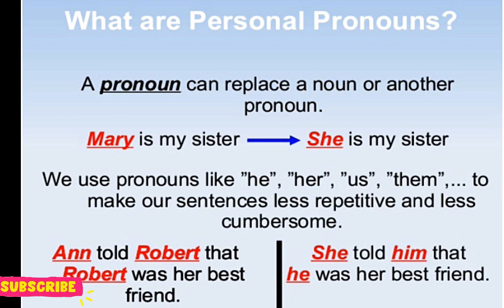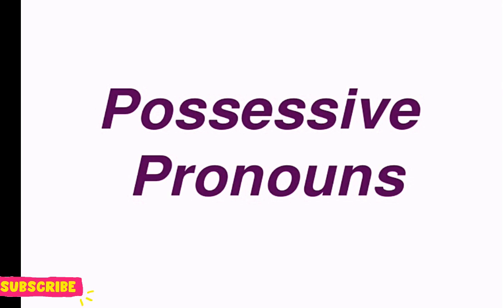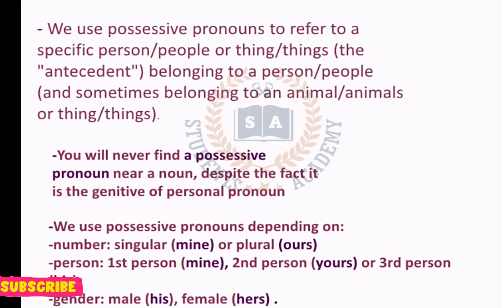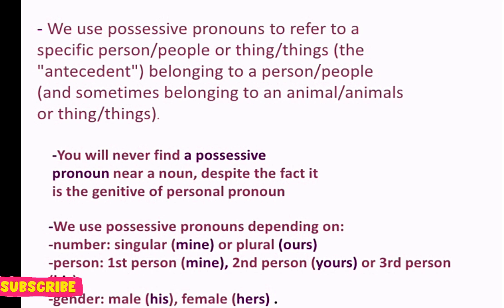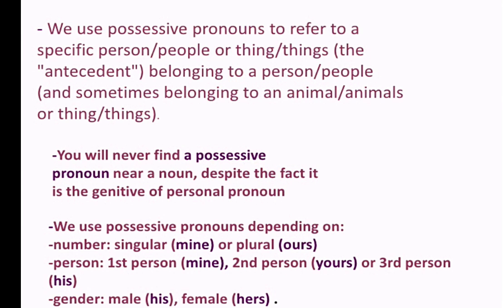اس کے بعد ہمارے پاس آ جاتا ہے possessive pronoun۔ نام سے ہی ظاہر ہے — possessive pronoun کسی بھی چیز کی possession show کرے گا۔ We use possessive pronoun to refer to a specific person, people or thing belonging to a person, people, and sometimes belonging to animals or things۔ یہ possession کسی person کی کسی thing کے ساتھ ہو سکتی ہے۔ Example: 'I lost my pen' — اس میں جو 'my' ہے وہ possession show کر رہا ہے کہ وہ pen میرا تھا۔ اور 'she is my sister' میں بھی 'my' possessive pronoun ہے۔